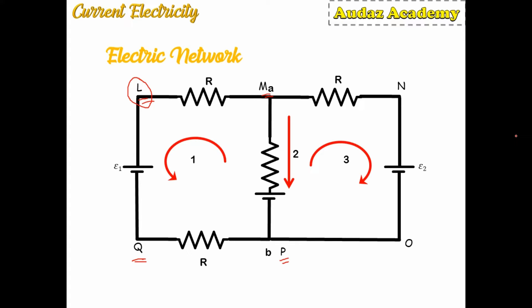We can also go L, Q, P, O, N, M, L — this will become the second loop. Whenever we are defining a loop, we keep in mind that there must be one EMF source inside it.